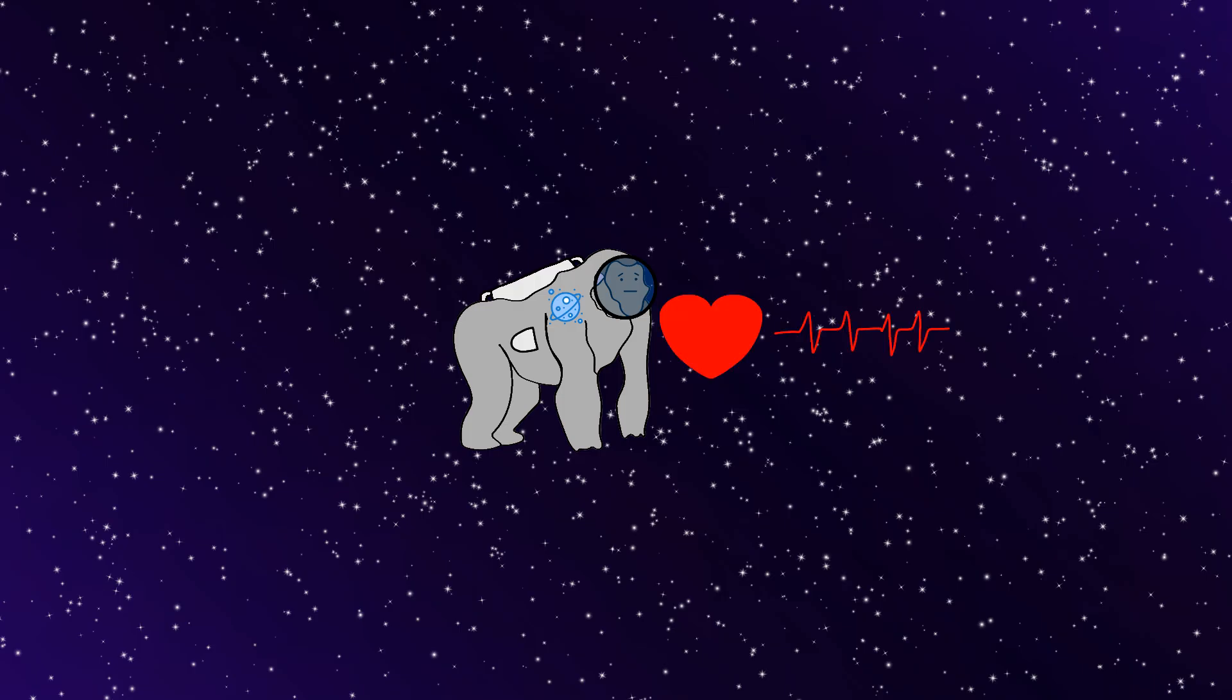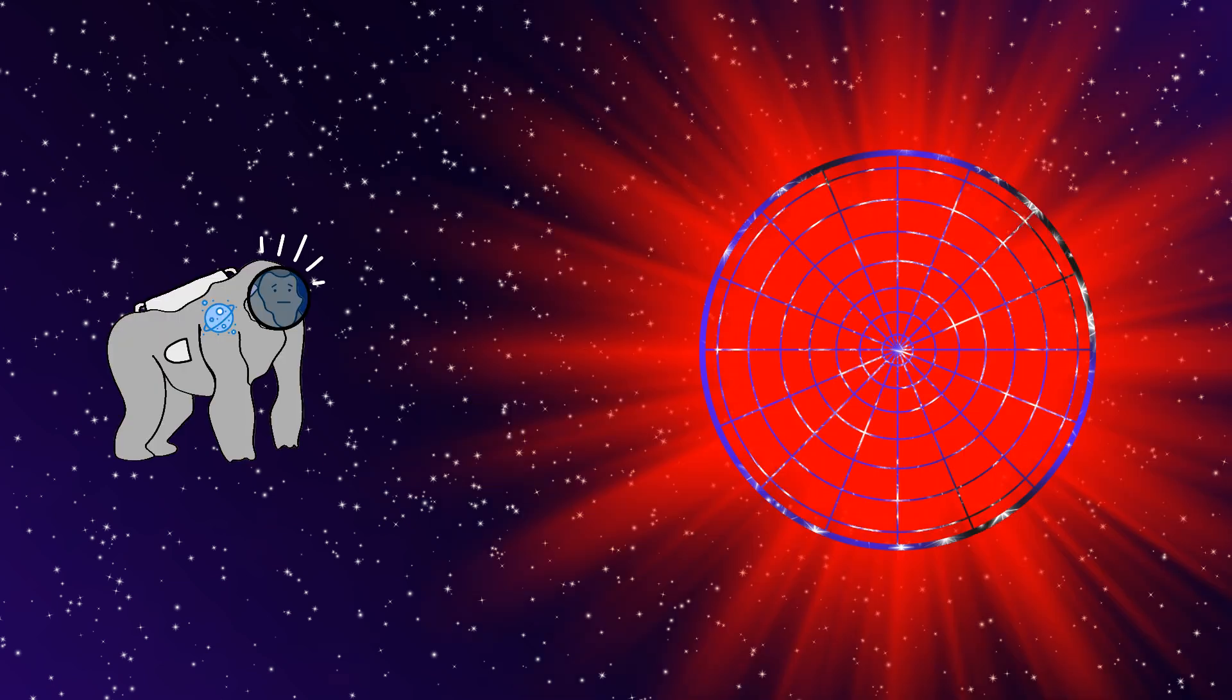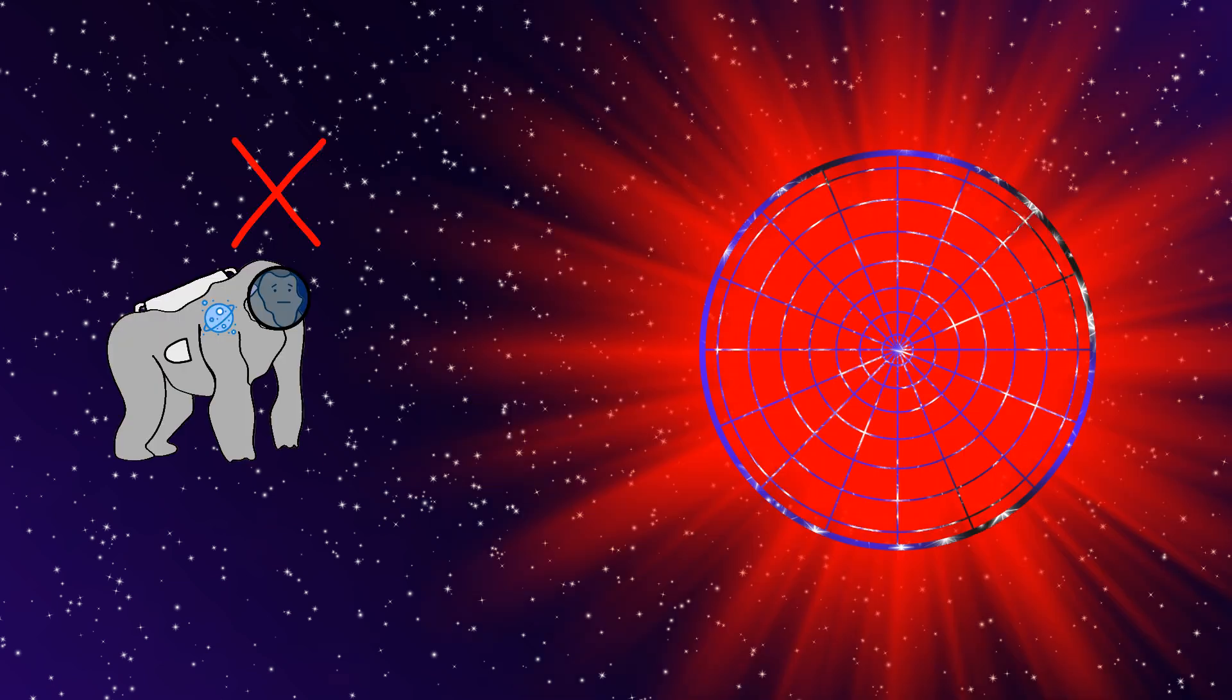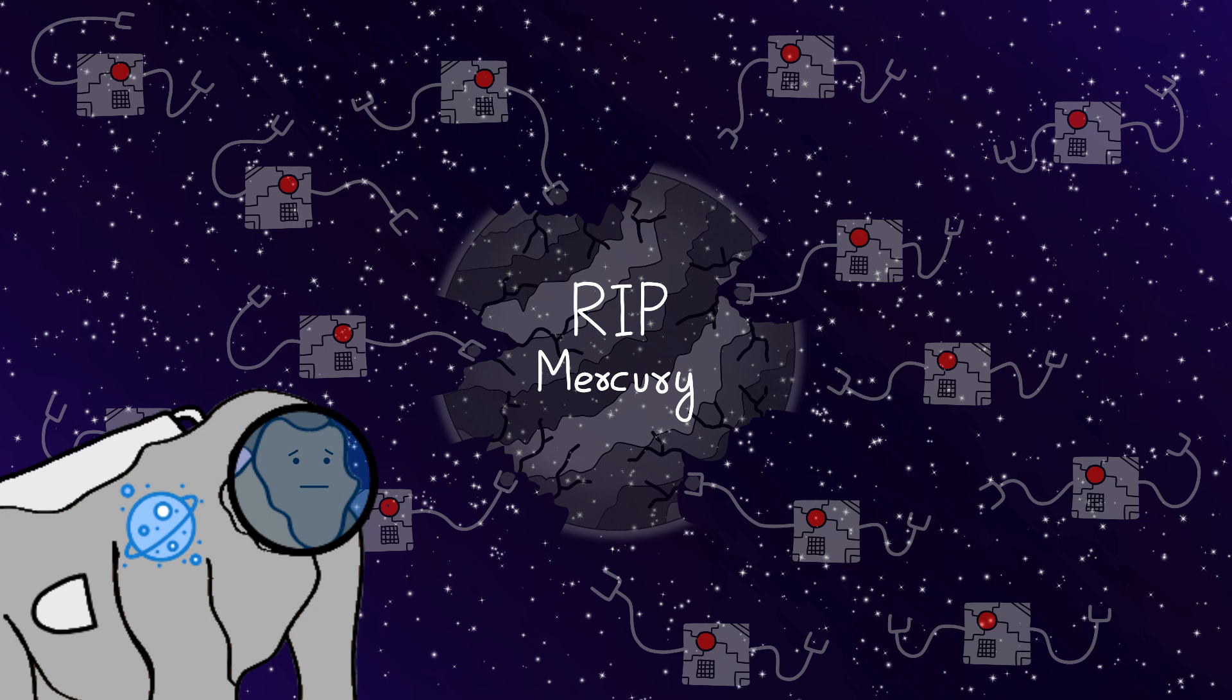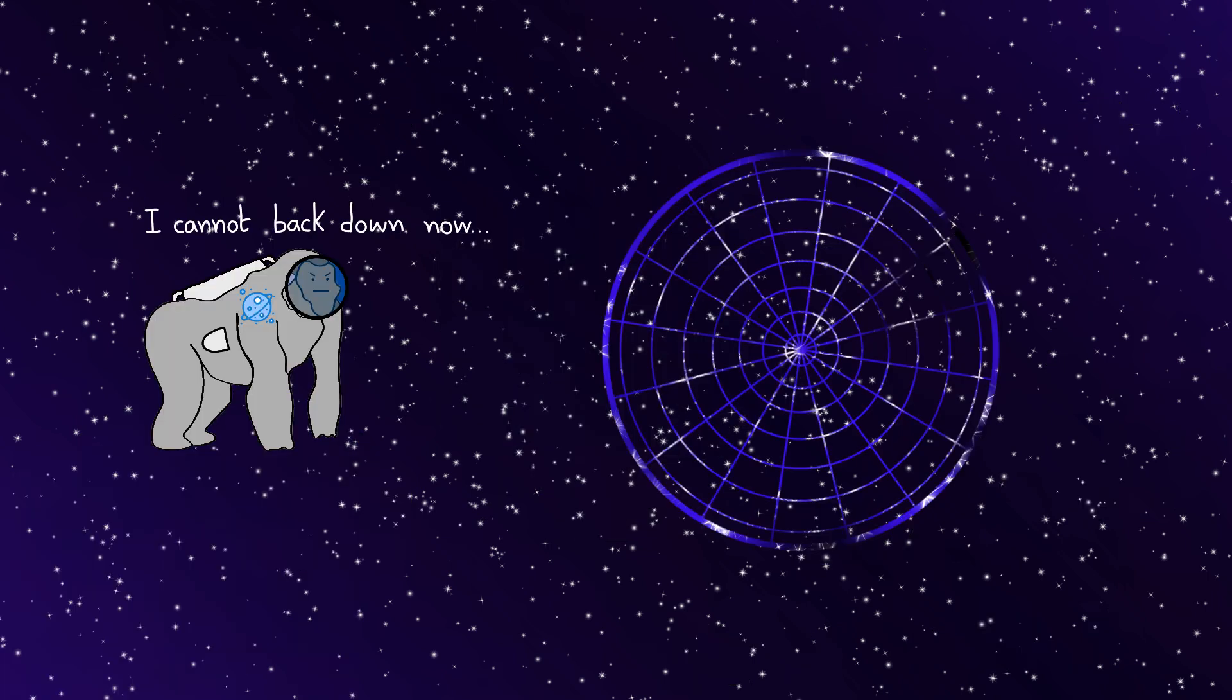At this point, Monkey's heart is racing, because Monkey realizes this project has consequences Monkey never considered. And every decision Monkey makes could either create paradise, or destroy everything. But Monkey's already disassembled an entire planet, so Monkey has to see this through to the end.